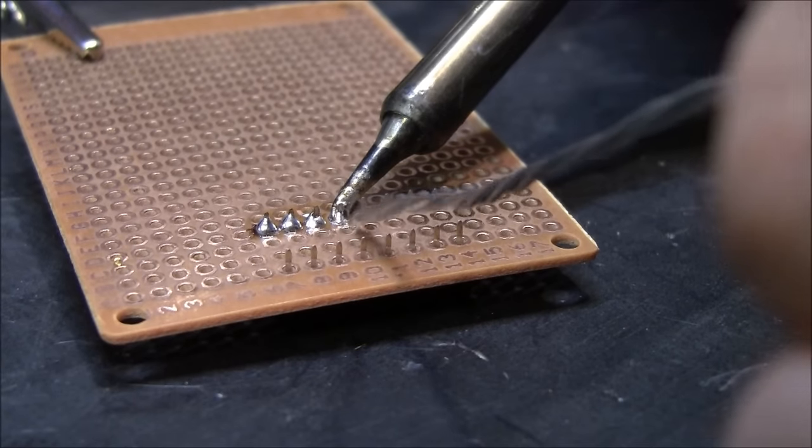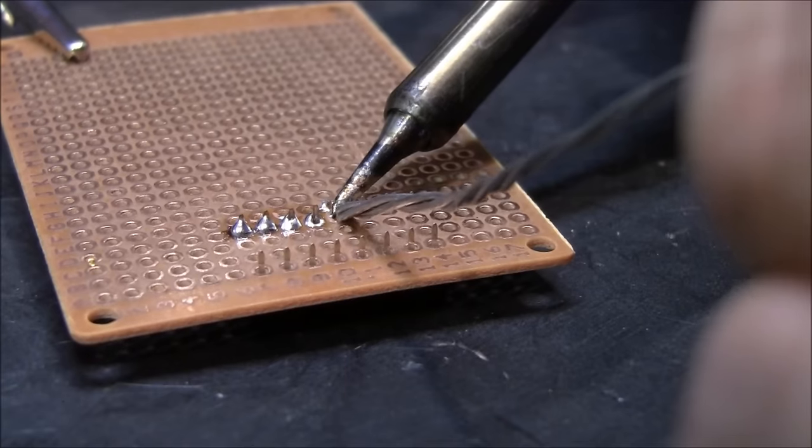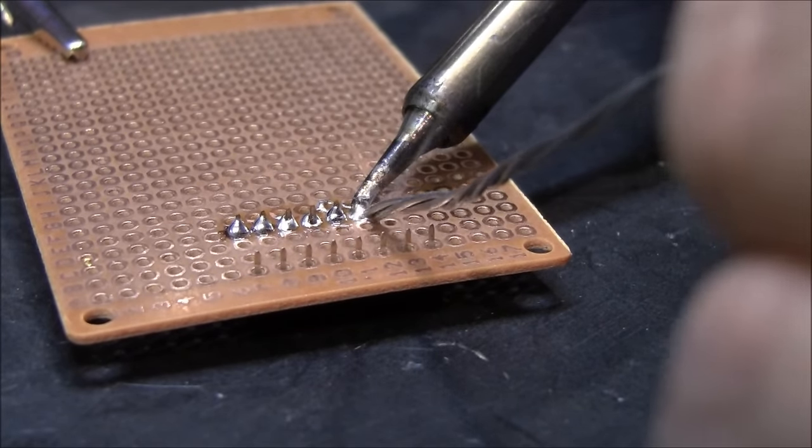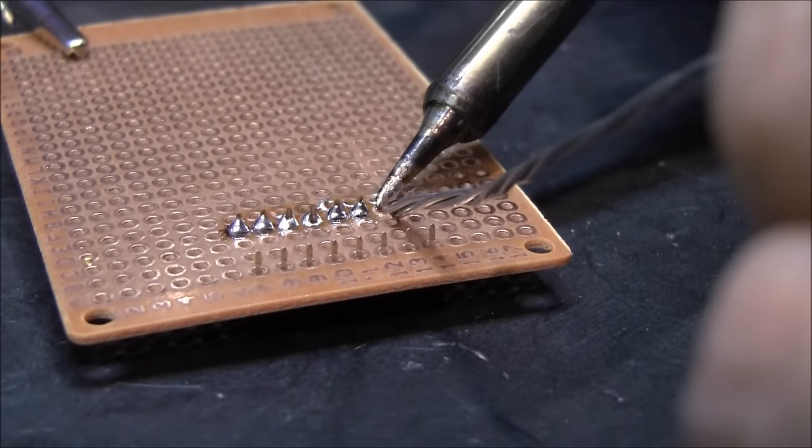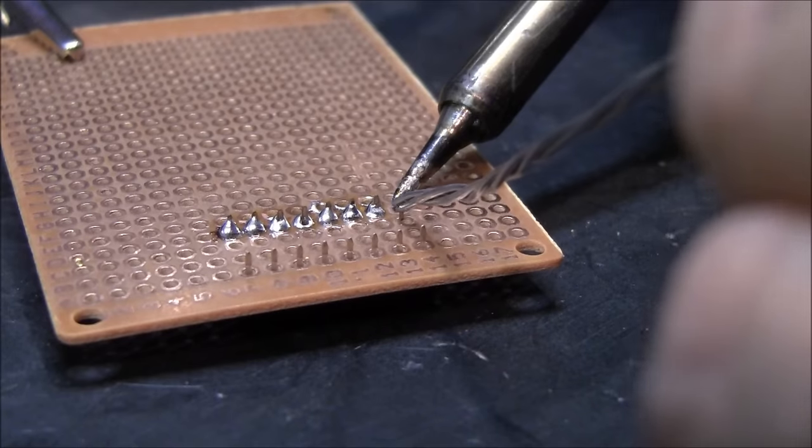But you definitely want to get the metal hot, and you want to apply your solder directly to the metal. The reason you do this is because there is flux. This is rosin core solder.